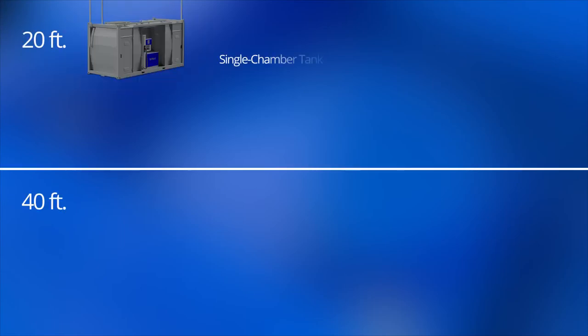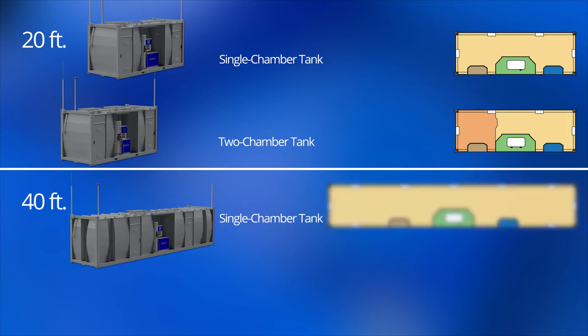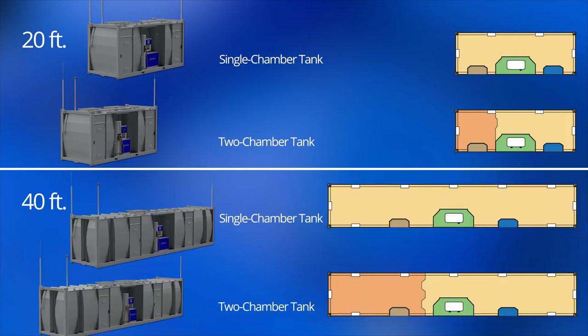The compact filling stations are available in 20-foot and 40-foot models. Each is a single-chamber and two-chamber version. The volume with the 20-foot filling station in the single-chamber version is approximately 29,000 liters. In the two-chamber version, 8,000 and 21,000 liters.